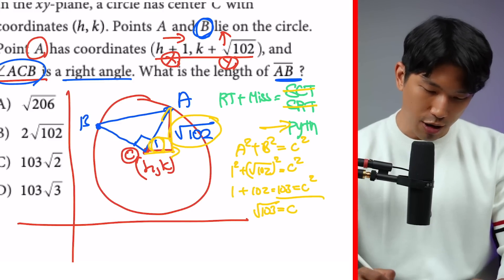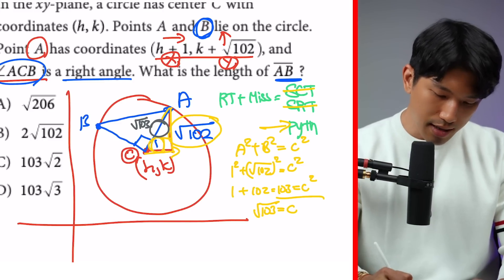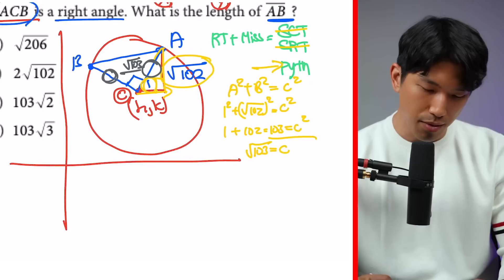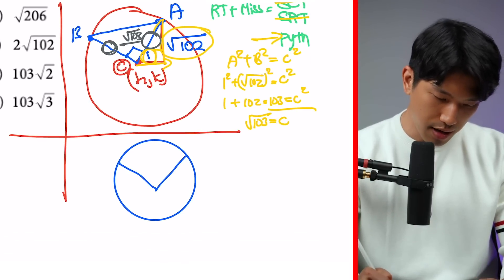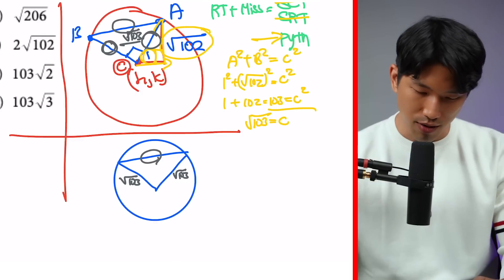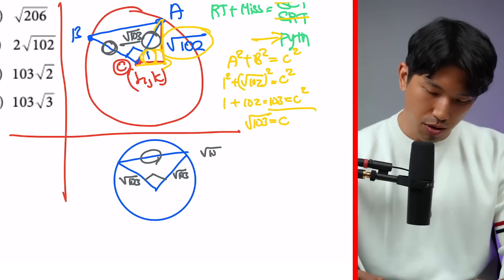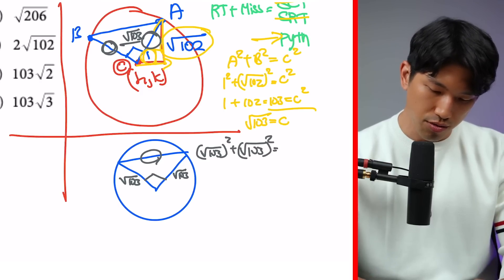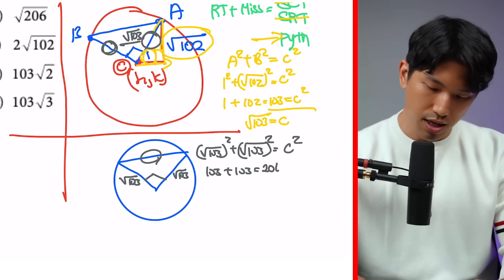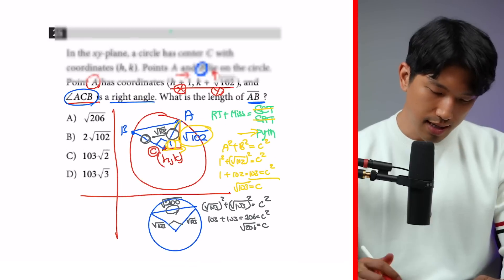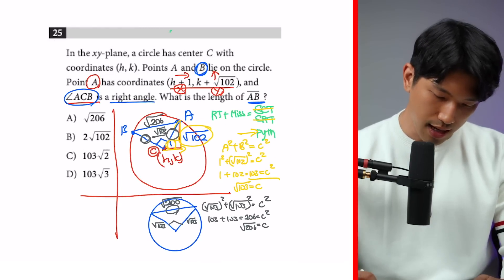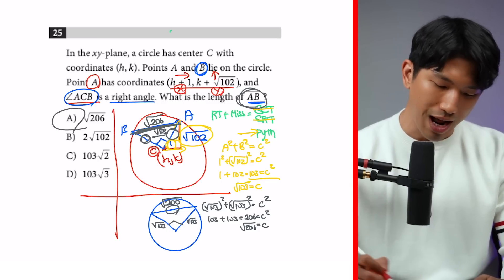Since CA is a radius of the circle, CB is also radical 103. So we have a right triangle with two legs of radical 103 each, and we're looking for AB. Applying Pythagorean theorem: radical 103 squared plus radical 103 squared equals C squared, which gives 103 plus 103 equals 206 equals C squared, so C equals radical 206. The length of AB is radical 206.